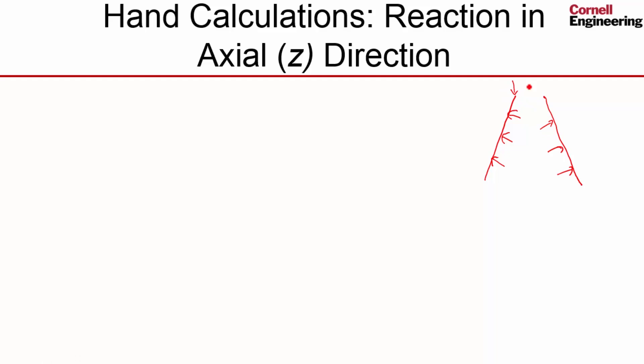So we're going to get a reaction from the frictionless support in the z direction—that's z there. The reaction will be in the negative z, and we can estimate that from the pressure.